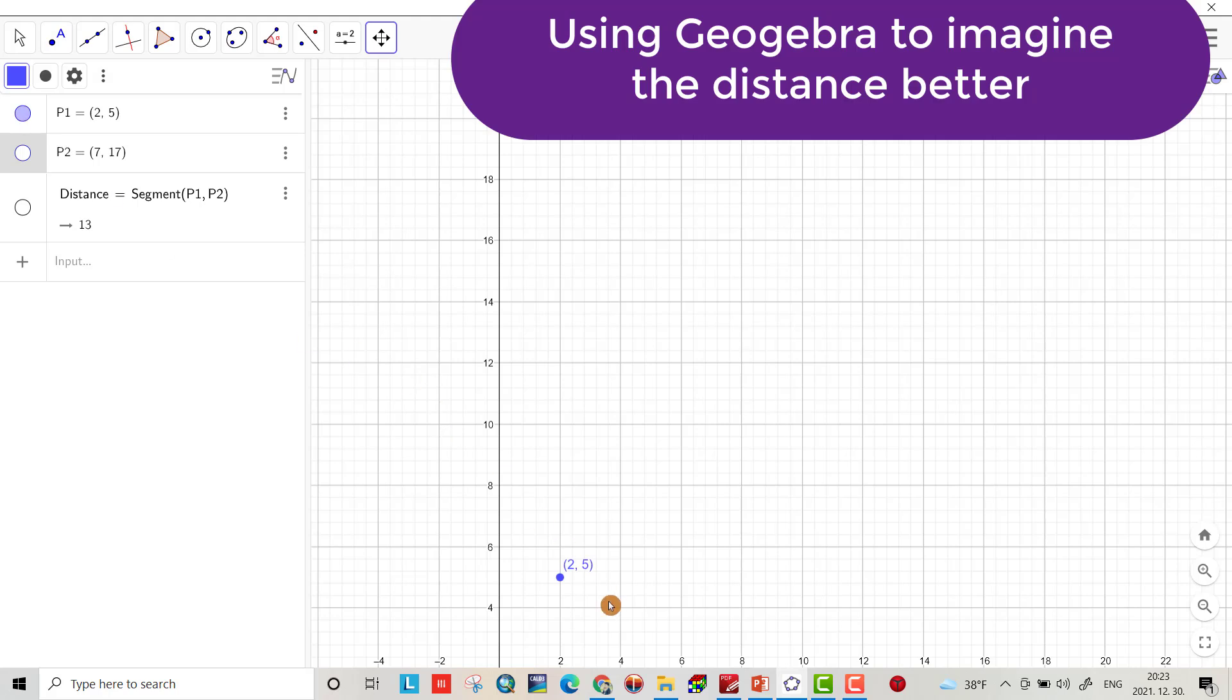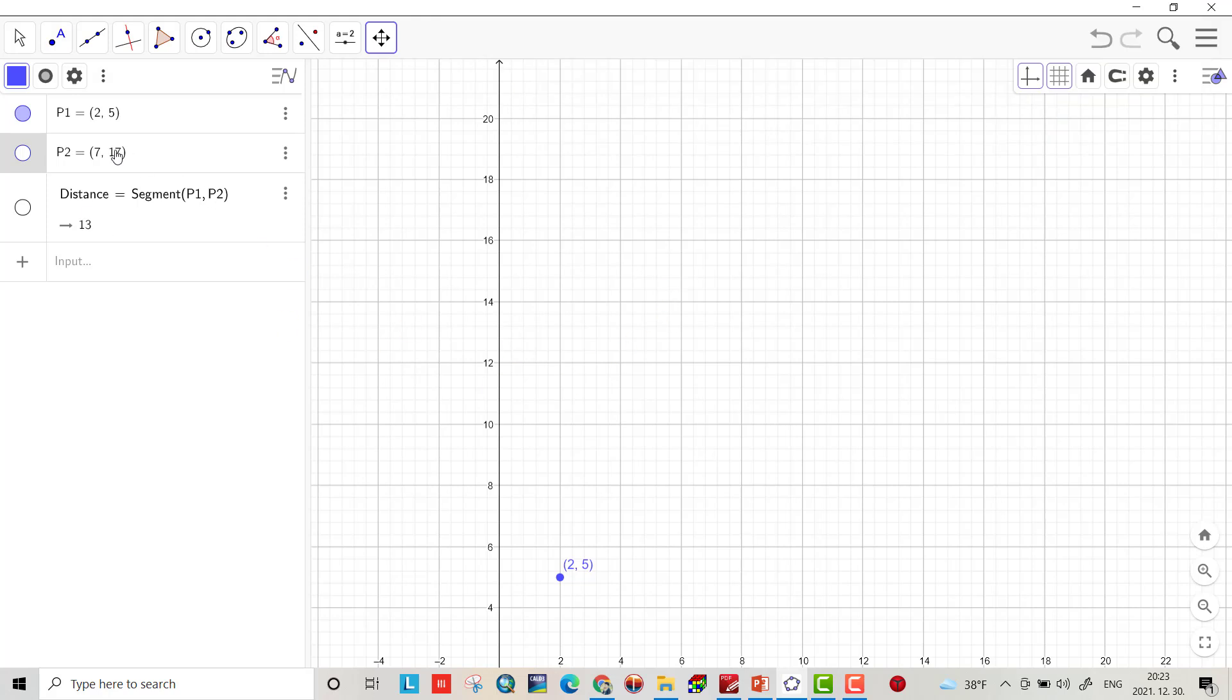Point 1, that's point 1, 2 and 5. Point 2, 7 and 17. That is the distance which equals 13.